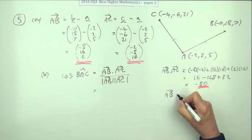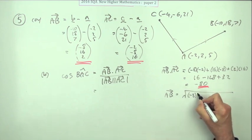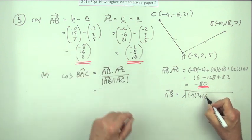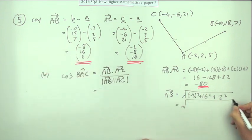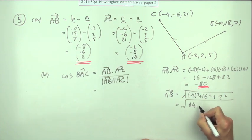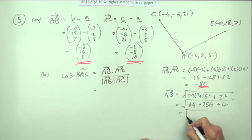Length of AB, that'll just be the three-dimensional Pythagoras: the negative 8 squared, the 16 squared, and the 2 squared. So that's the square root of 64, 256, and 4, so that's the square root of 324.